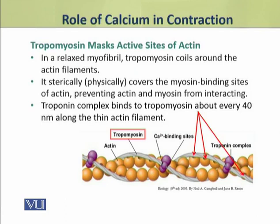Troponin attaches to tropomyosin at every 40 nanometer interval, and it helps to hold and maintain tropomyosin in its position on the actin filament.